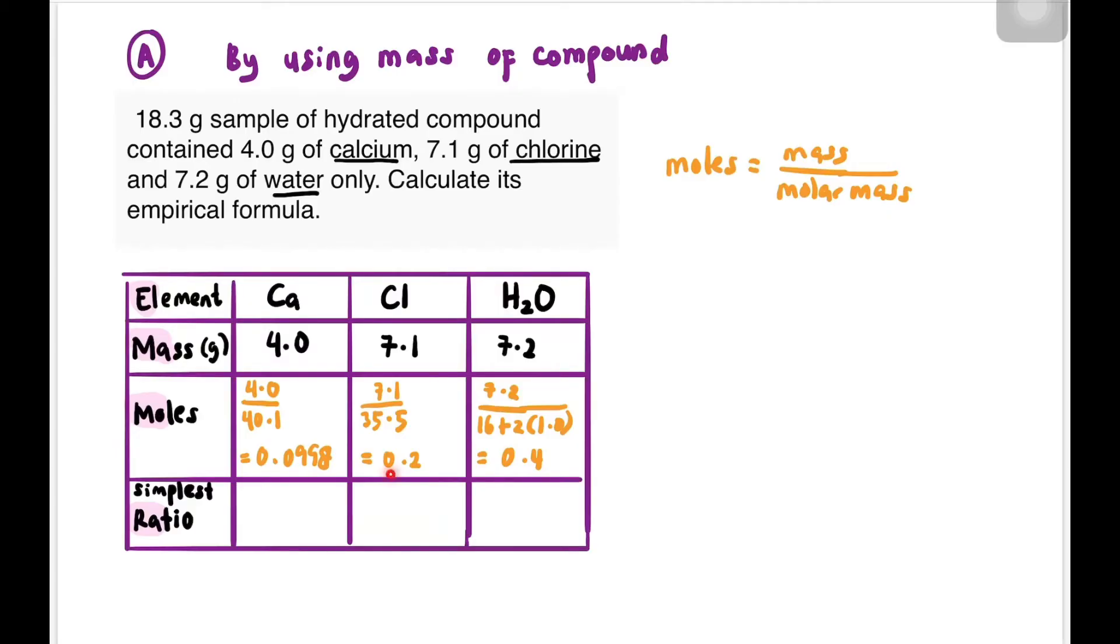After getting all three mole values, we go to the ratio. To get the ratio, we divide by the smallest mole value among the three components. The smallest is calcium's value at 0.0998, so everything is divided by this. You should get 1 for Ca, then Cl has ratio 2, and H2O has ratio 4. The empirical formula for the hydrated compound is CaCl2·4H2O.